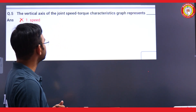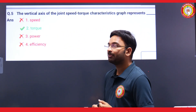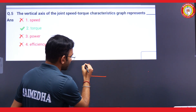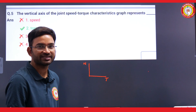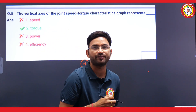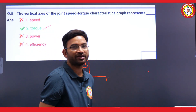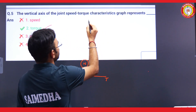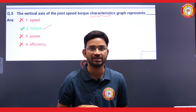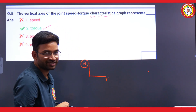First question: the vertical axis of a joint speed-torque characteristic graph represents — this question does not mention which particular machine. If I show you speed versus armature current for a DC machine and draw the speed-torque characteristic, the vertical axis represents speed. But if I show a different machine such as an induction machine, the answer may differ. So, because the machine type is not specified, I will raise an objection on this question.